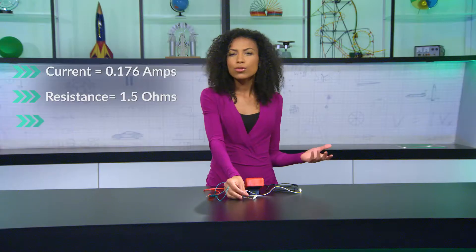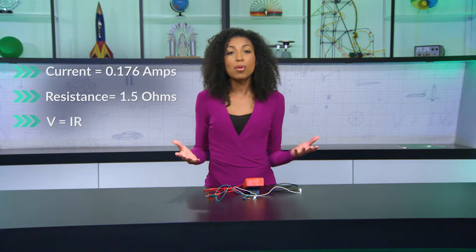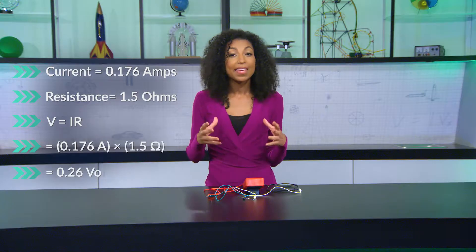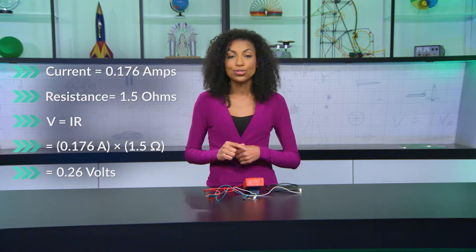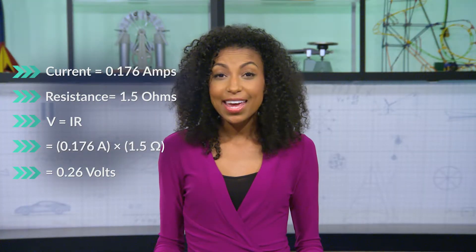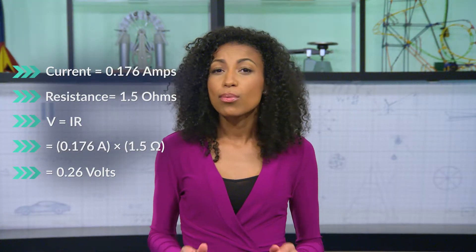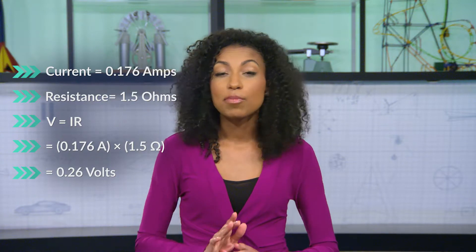It looks like the resistor's resistance is 1.5 ohms. By Ohm's Law, when we multiply these two together, we get the calculated voltage of 0.26 volts. In Ohm's day, measuring what we just did would have been much more difficult. But with modern equipment, it's relatively easy.